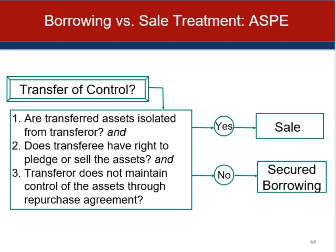Under ASPE, the transferred assets must have been isolated — put beyond the reach of the transferor and its creditors even in bankruptcy or receivership, so these are not assets of the company available to creditors. Each transferee must have the right to pledge or exchange the assets received, with no condition constraining that right. Finally, the transferor must not maintain effective control over the transferred assets through an agreement to repurchase or redeem them before maturity, or through an ability to unilaterally cause the holder to return them. If all three conditions are not met, the seller must record the transaction as a secured borrowing.